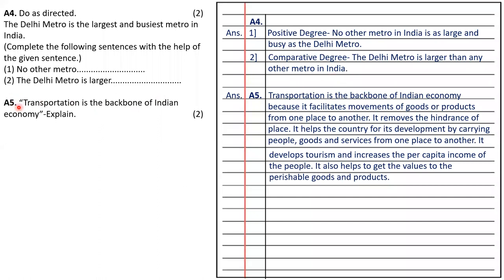Question A5: transportation is the backbone of the Indian economy — explain. Transportation is the backbone of the Indian economy because it facilitates movement of goods or products from one place to another. It removes the hindrance of place, helps the country develop by carrying people, goods and services, develops tourism, increases per capita income, and helps get the value of perishable goods and products.